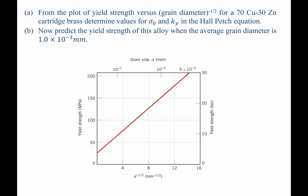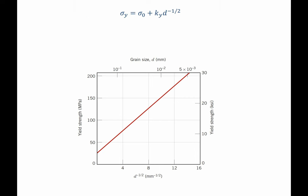So for this problem, let's begin part A by writing out the Hall-Petsch equation, which is shown here. Sigma-y is our yield strength, d is the grain size, which we're raising to the negative one-half power, and then sigma-naught and k-sub-y are the two Hall-Petsch coefficients that we're going to solve for.